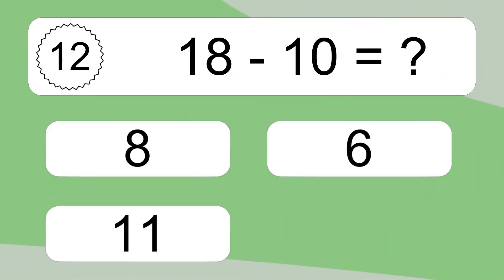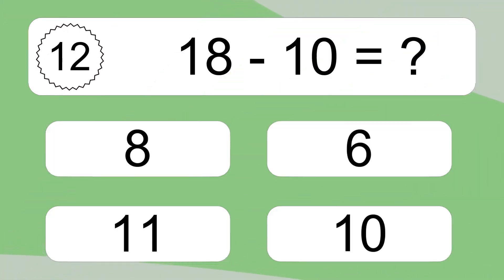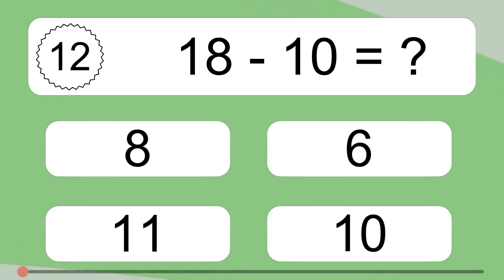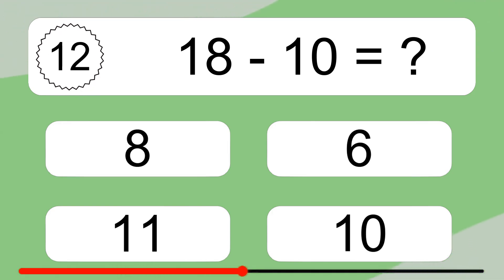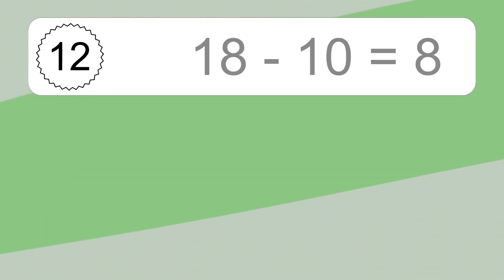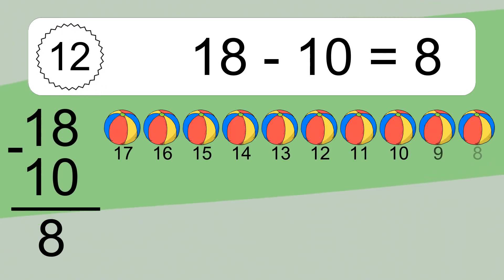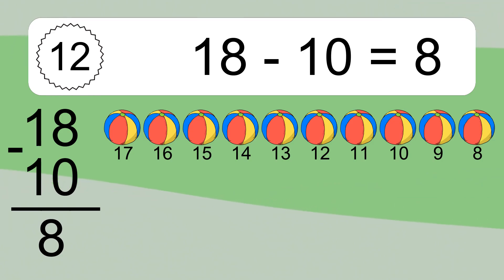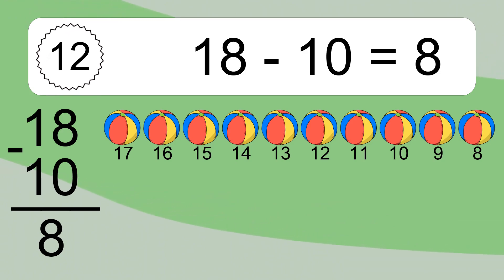18 minus 10 equals what? 18 minus 10 equals 8. Let's count it: 17, 16, 15, 14, 13, 12, 11, 10, 9, 8.